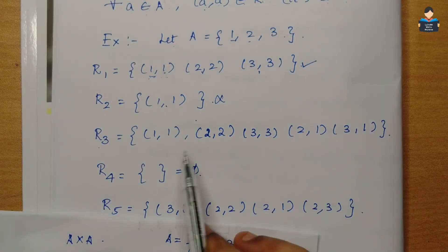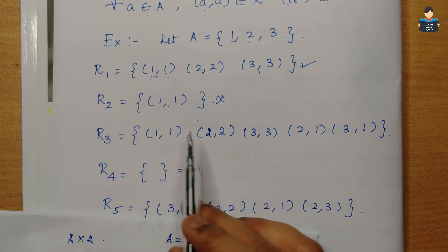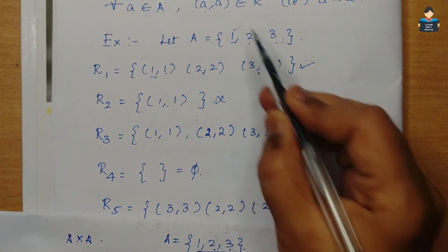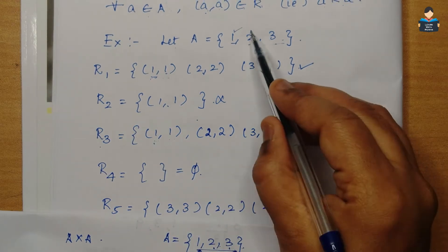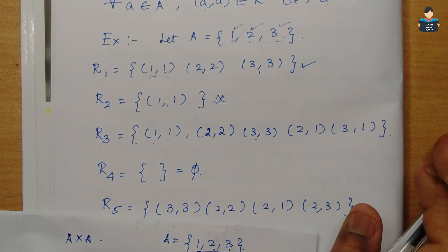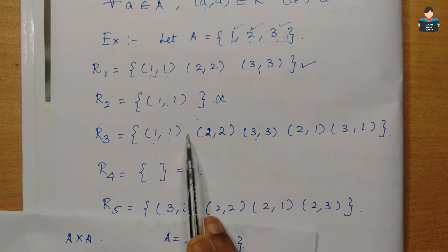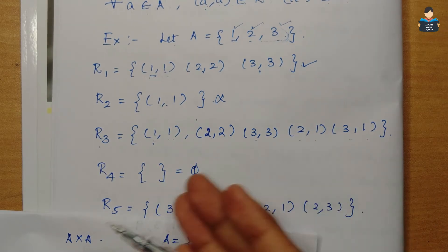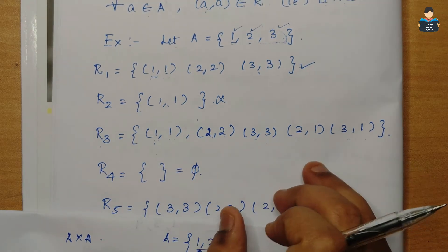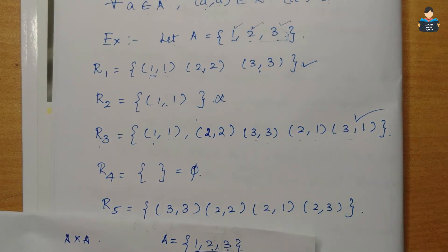R3 contains pairs like (1,1), (2,2), (3,3), (2,1), (3,1). The set A has 3 elements, so we need all three pairs (1,1), (2,2), and (3,3). Since all (a,a) pairs are present, this relation R3 is reflexive.